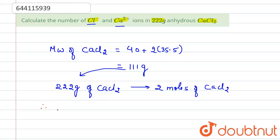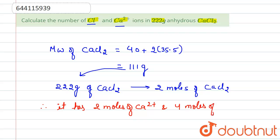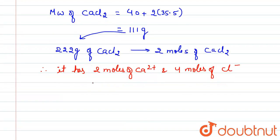Therefore, two moles of CaCl₂ gives two moles of Ca²⁺ ions and four moles of Cl⁻ ions, because CaCl₂ has two chloride ions per formula unit, so two moles × 2 equals four moles of Cl⁻.